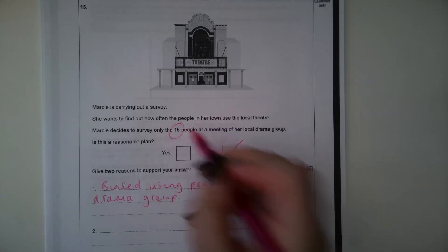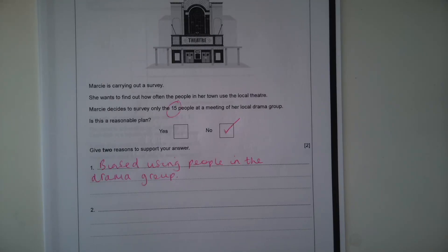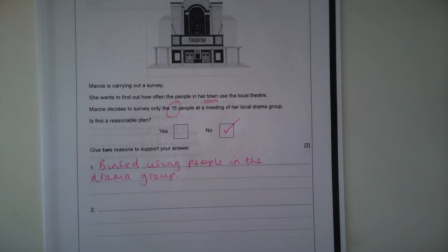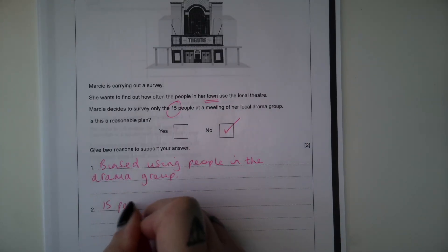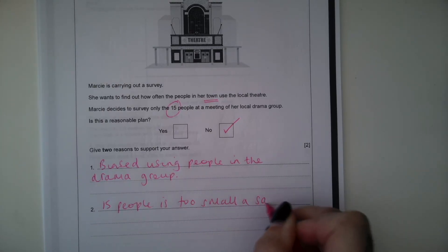The next reason is Marcie is only asking 15 people. It's a really small sample size. So that's not going to be representative of all of the people in her town. So 15 people is too small a sample.